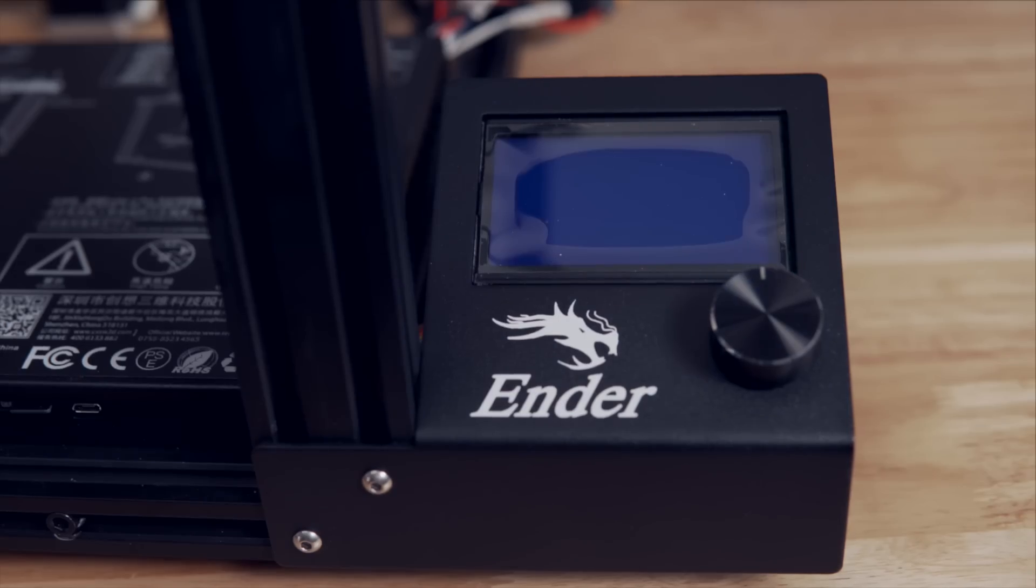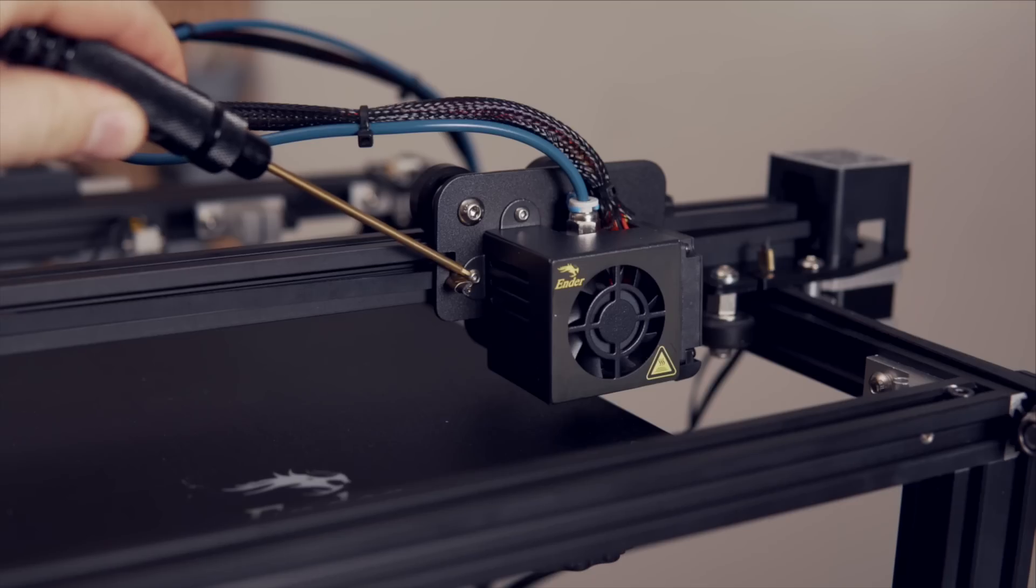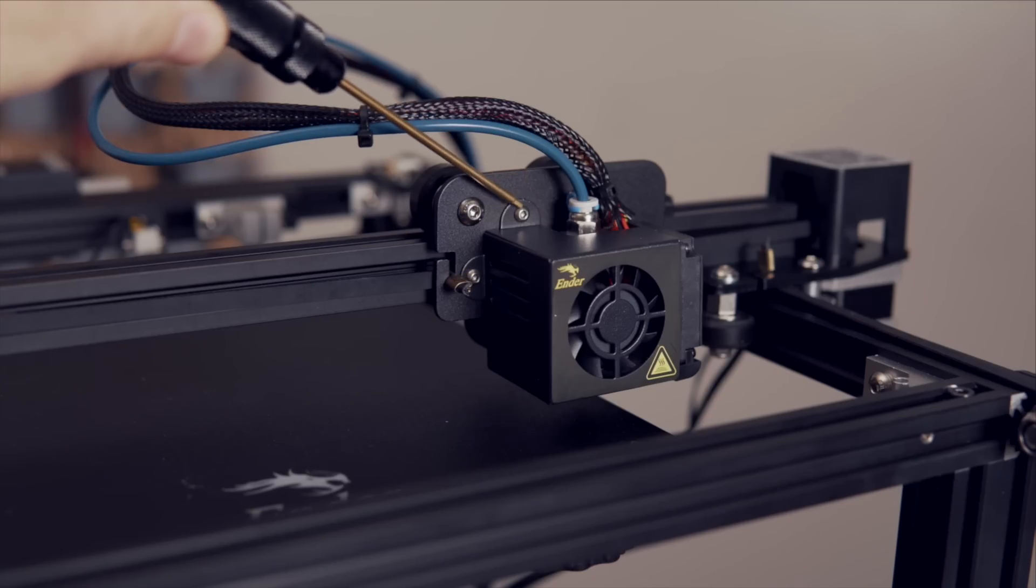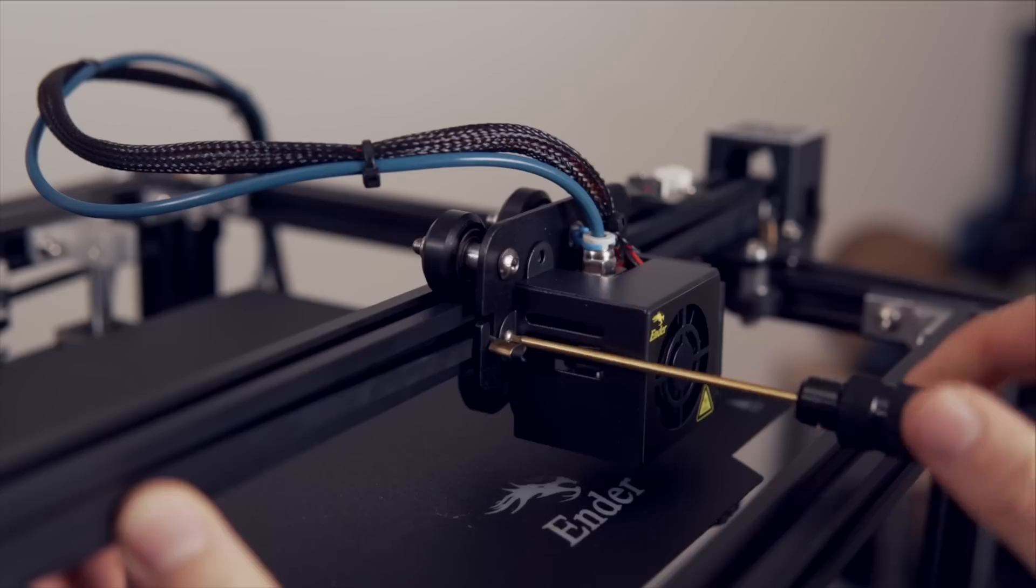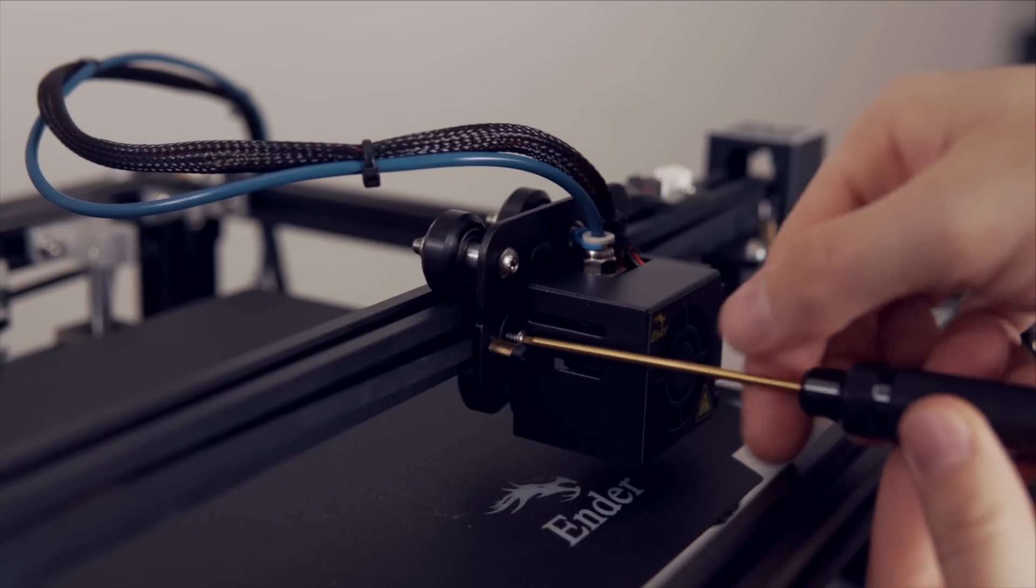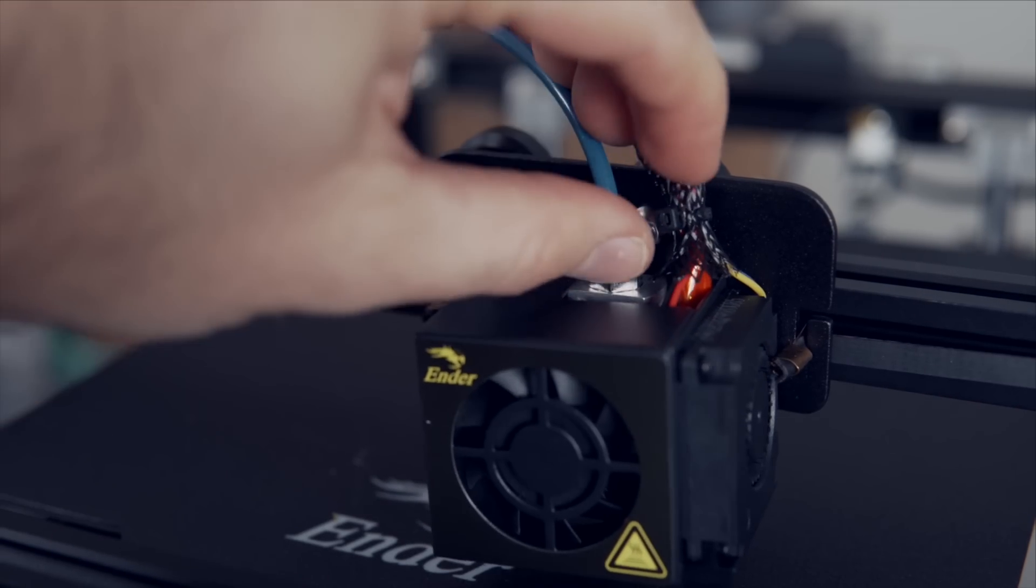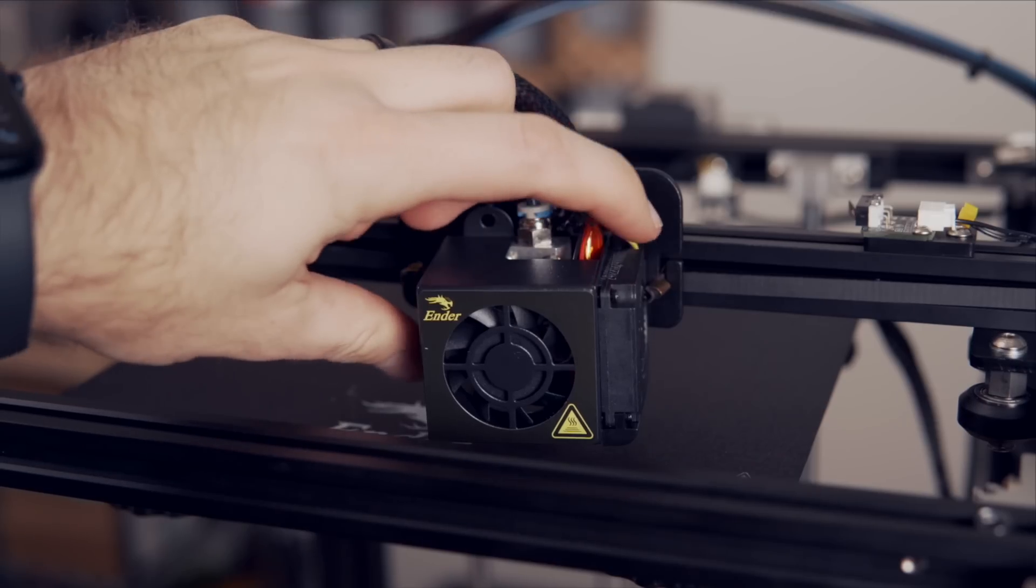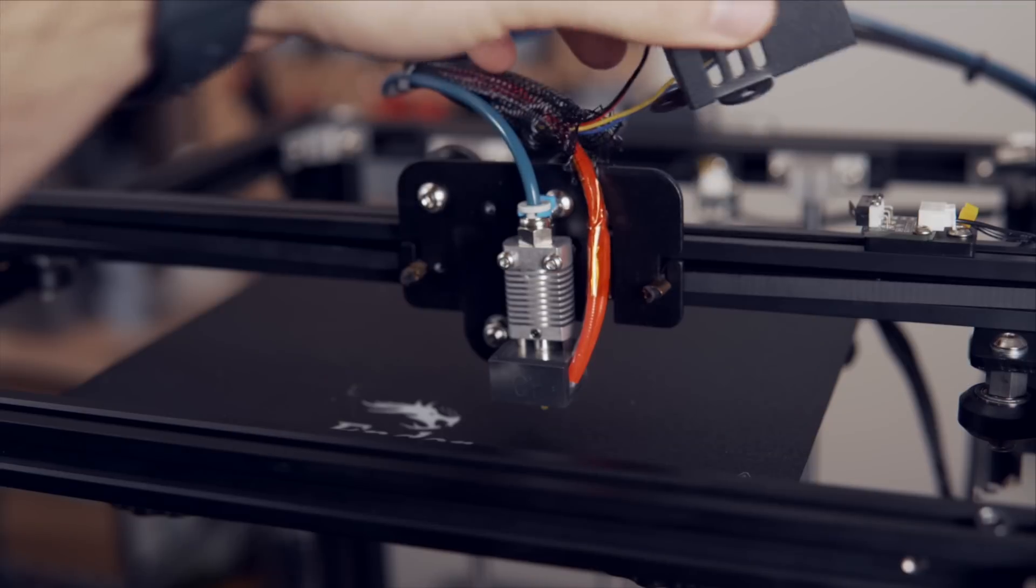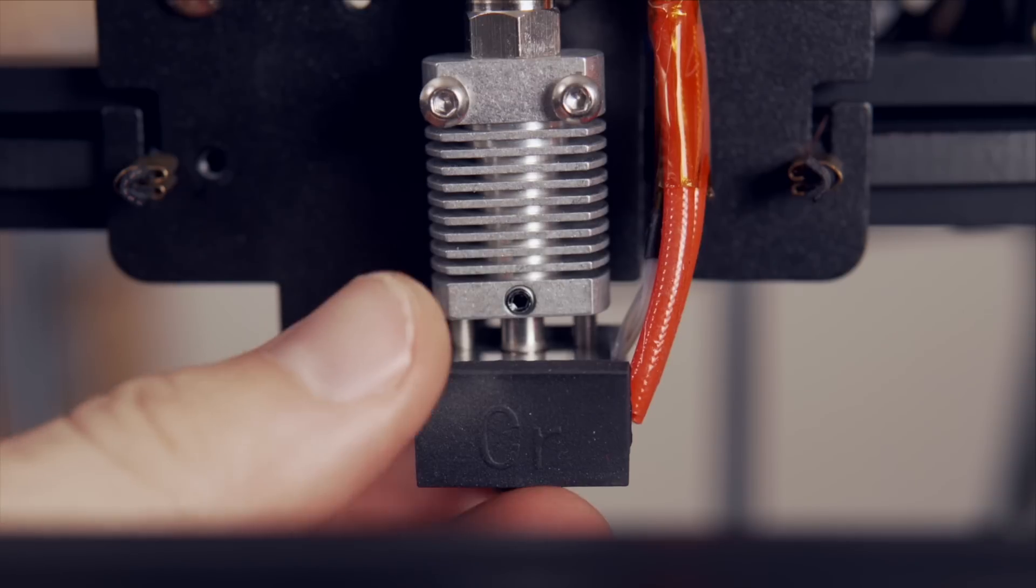Before doing anything else, power off your 3D printer and unplug the power cable. We will start by removing the fan cover on our hotend. There are two screws holding the fan cover in place. One is on the top and the other is on the left side. If there are any zip ties around those hotend wires, use your flush cutter to remove the zip tie. And then it should be pretty easy to just take that entire fan housing and swing it over the back side of the X carriage plate, making it much easier to access the hotend.